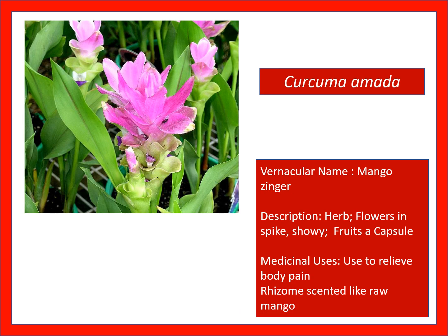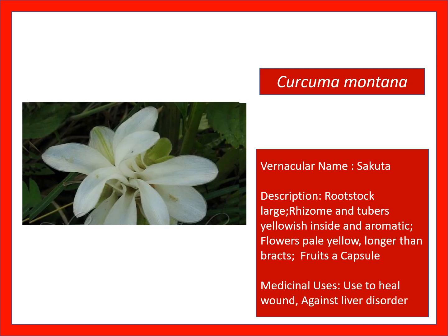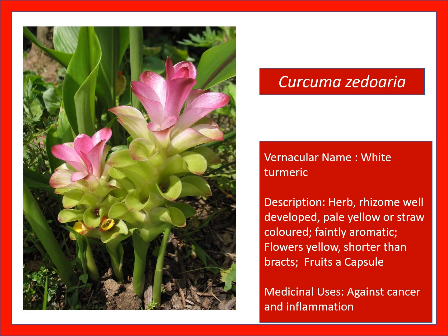Curcuma amada, vernacular name mango ginger, because the aroma is like mango — used to relieve body pain; rhizome is scented like raw mango. Curcuma montana — used to heal wounds and against liver disorder and liver problems. Curcuma zedoaria — against cancer and inflammation.